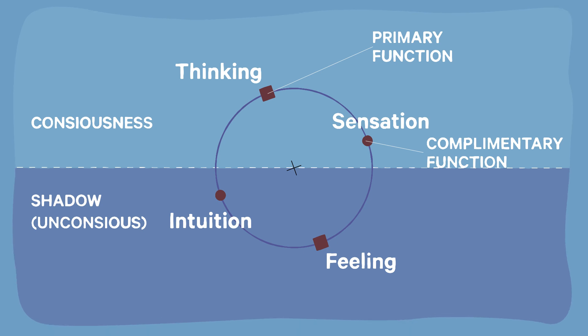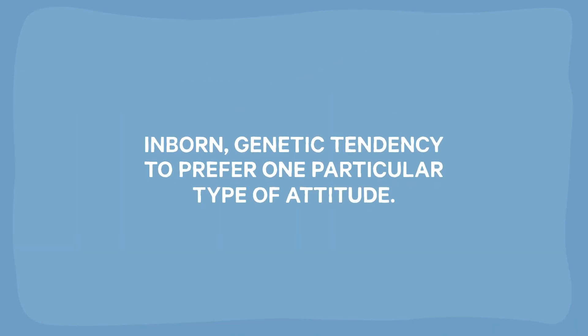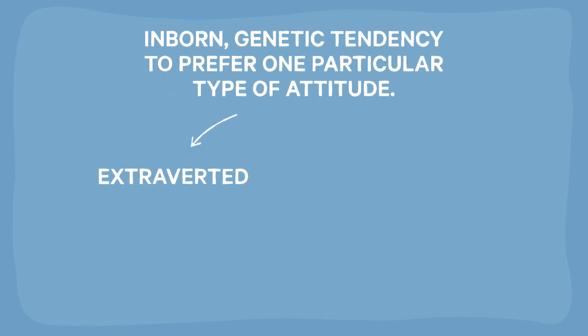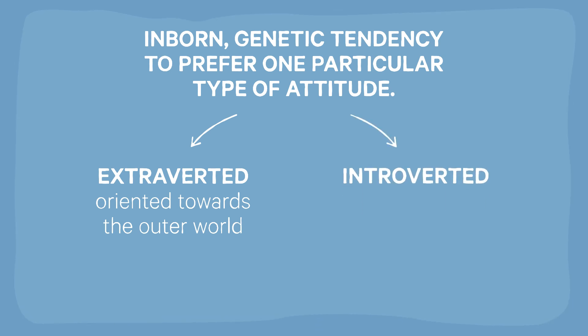Besides these four functions, Jung argued that the ego has an inborn genetic tendency to prefer one particular type of attitude, either extroverted and oriented primarily towards the outer world, or introverted and primarily concerned with the inner world.